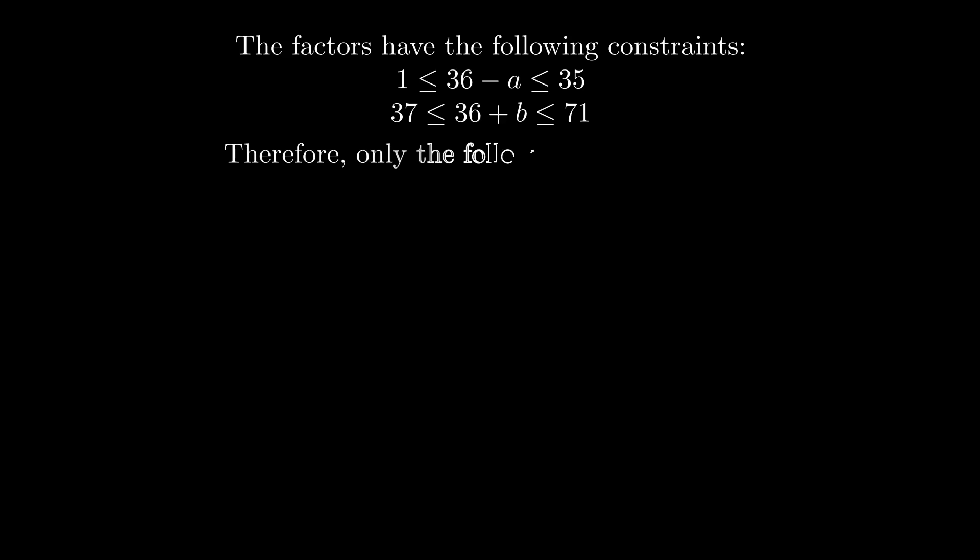As A and B are bounded, the factors have the following constraints. 36 minus A is between 1 and 35, while 36 plus B is between 37 and 71. As a result, there are only two valid pairs.